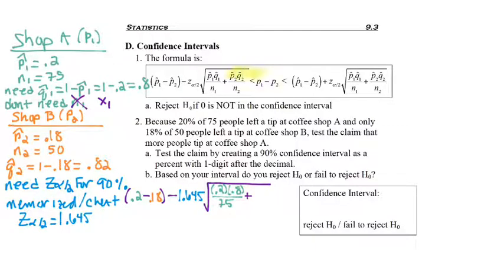And now we take the p-hat 2 times q-hat 2, which we've already found. So 0.18 times 0.82, dividing by n2, which is 50. And that's just the left side of our confidence interval. Now we need to do that again, where it's 0.2 minus 0.18.